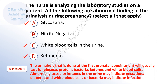The urinalysis done at the first prenatal appointment will usually test for glucose, protein, bacteria, ketones, and white blood cells. Abnormal glucose or ketones in the urine may indicate gestational diabetes, and white blood cells or bacteria may indicate infection.